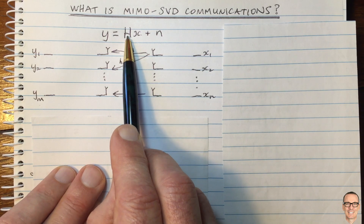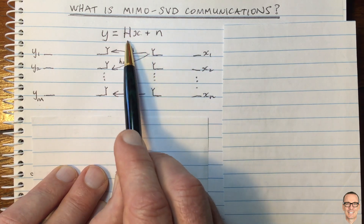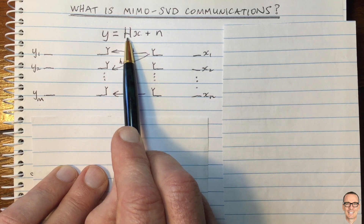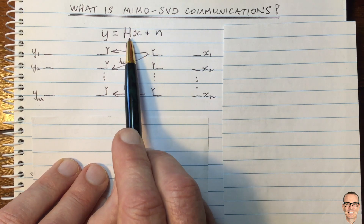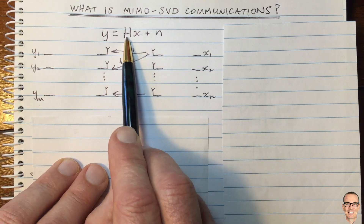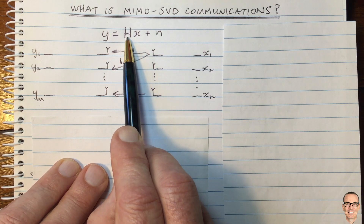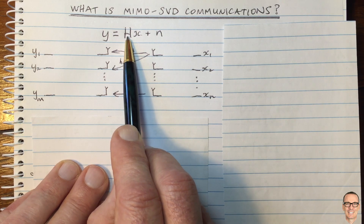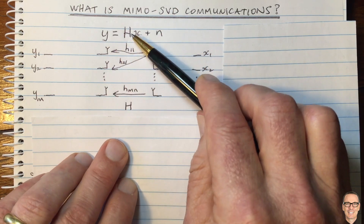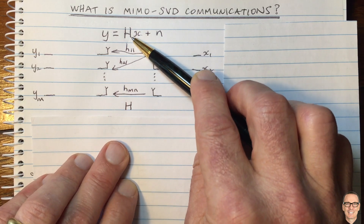There are videos on this YouTube channel explaining receiver designs. One of the things, if you're going to try to invert the channel, is that the channel can only be inverted if this matrix is square. So that's not very practical in many cases — there are lots of situations where the channel is not square.